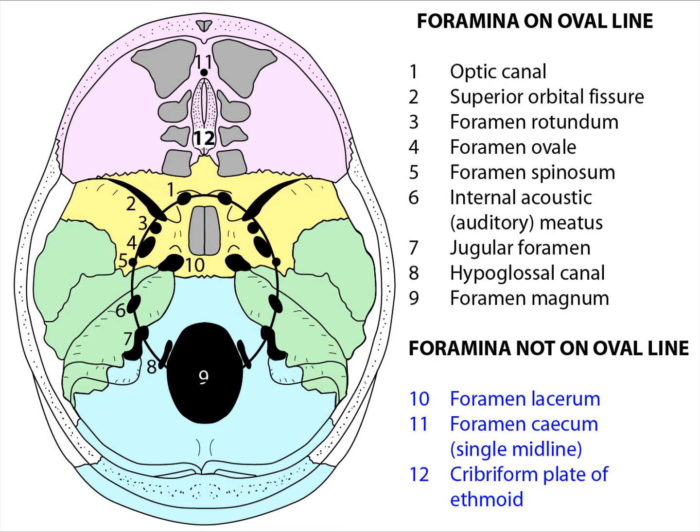There are three foramina not on this oval line. Number ten is the foramen lacerum, and the internal carotid artery exits through this. We might add that the deep petrosal nerve, which consists of sympathetic fibres off the artery, passes and joins with the greater petrosal nerve to make the nerve of the pterygoid canal, which then enters the pterygoid canal to reach the pterygopalatine fossa.